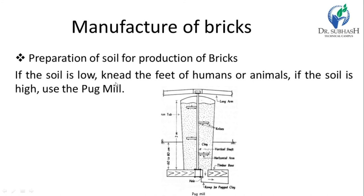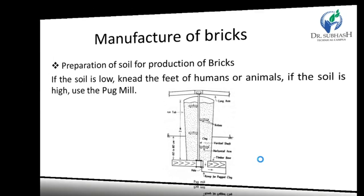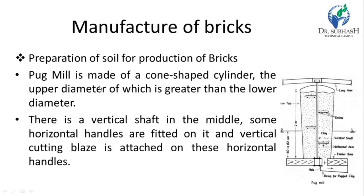If the soil consistency is low, tempering is done manually by human or animals treading it. If the soil consistency is high, a pug mill is used. The pug mill is made of a cone-shaped cylinder, the upper diameter of which is greater than the lower diameter. There is a vertical shaft in the middle with horizontal handles fitted on it, and vertical cutting blades are attached to these horizontal handles.